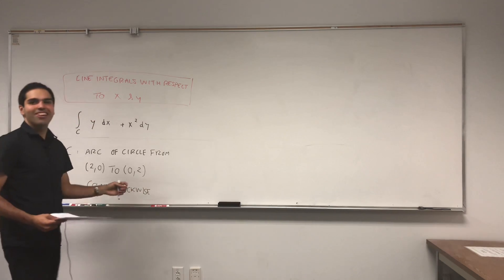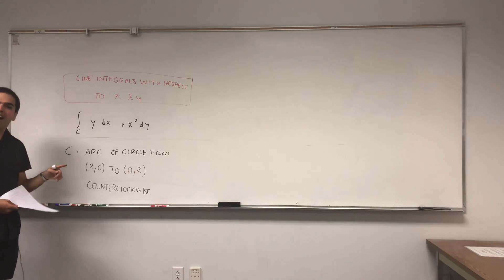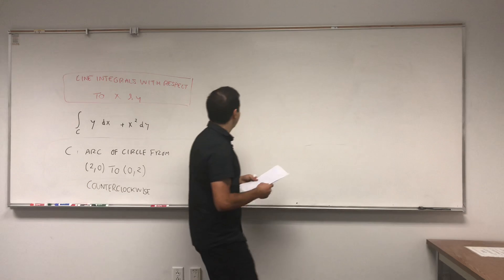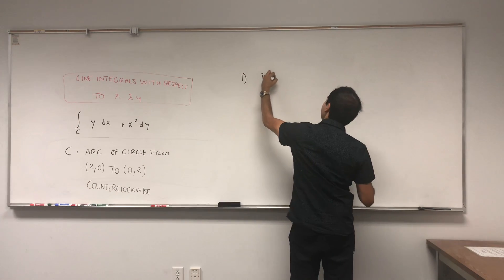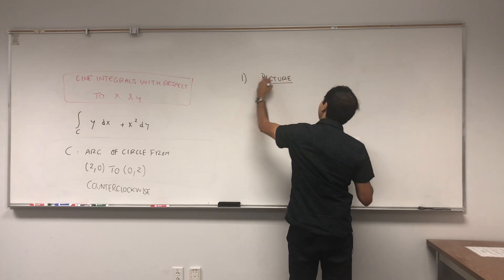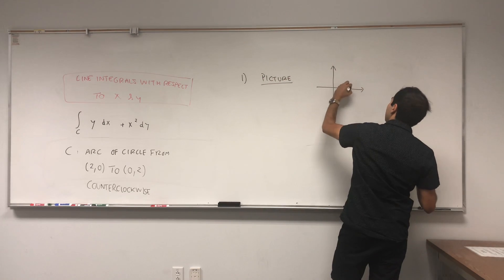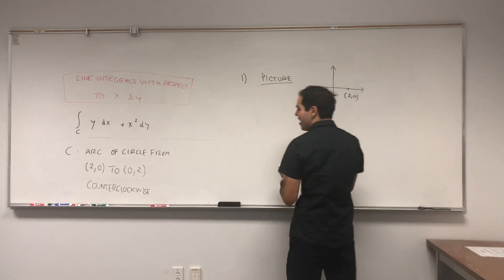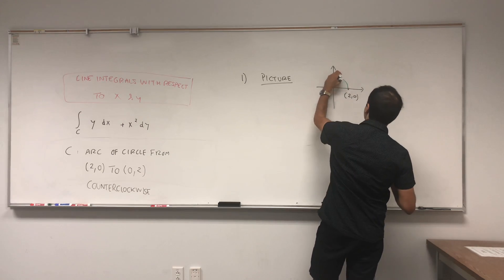So we like counterclockwise directions here, and the orientation matters. If I told you clockwise it would be minus the answer. First, as usual in multivariable calculus, let's draw a nice picture. So you have this arc of circle starting at (2,0) and going to (0,2) in this direction.